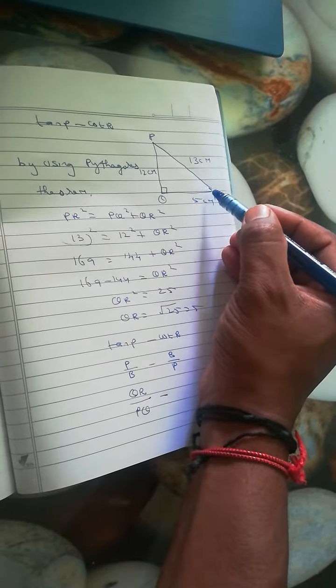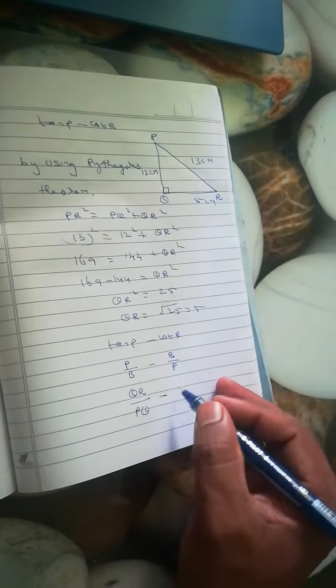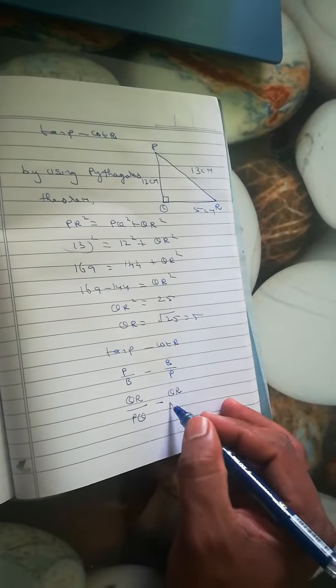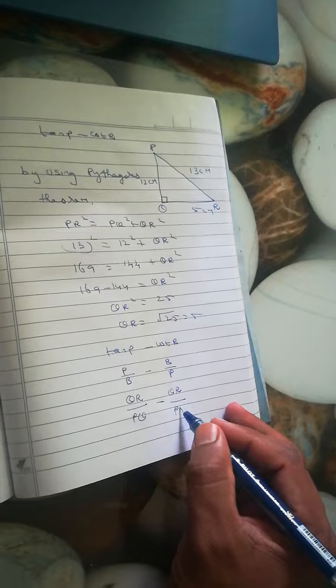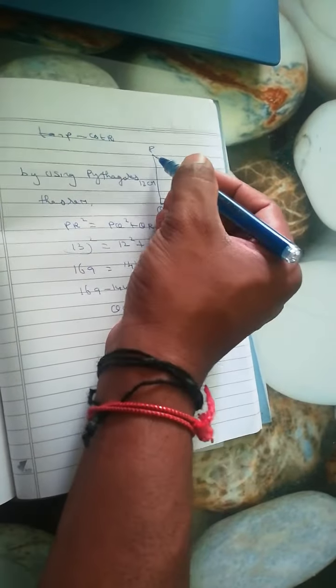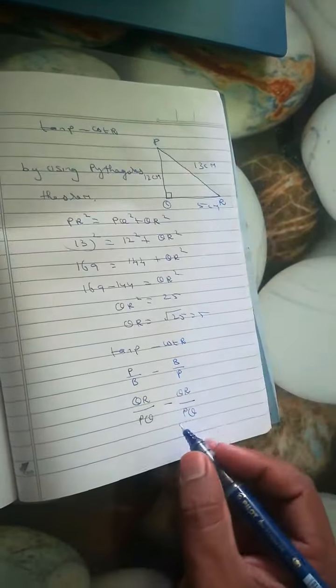Cot R means base is QR and perpendicular is PQ. Because if R is here, the perpendicular is this one. If P is here, the perpendicular is this one.